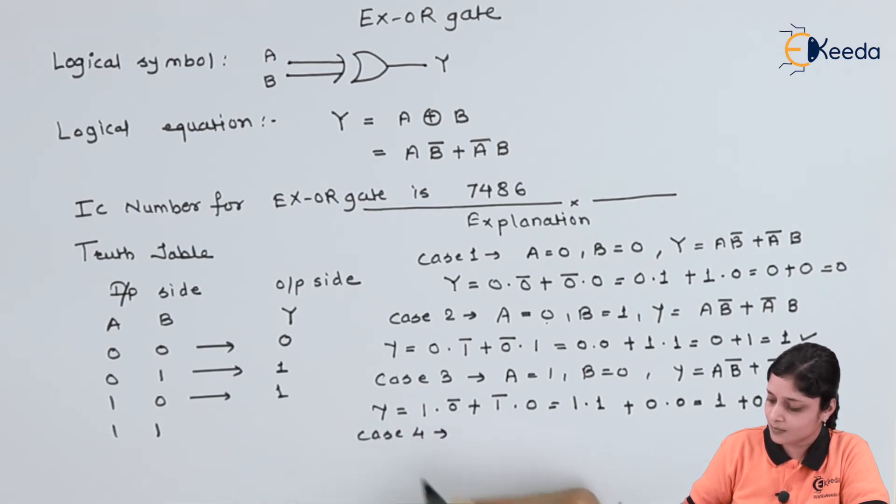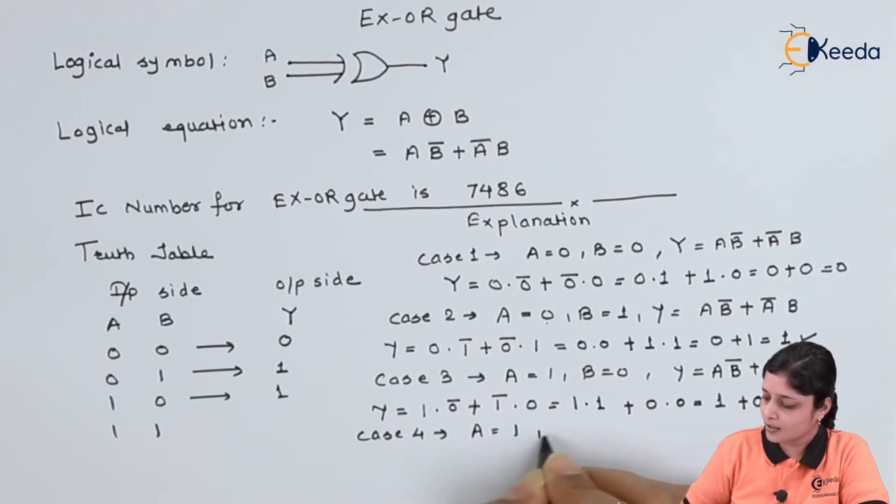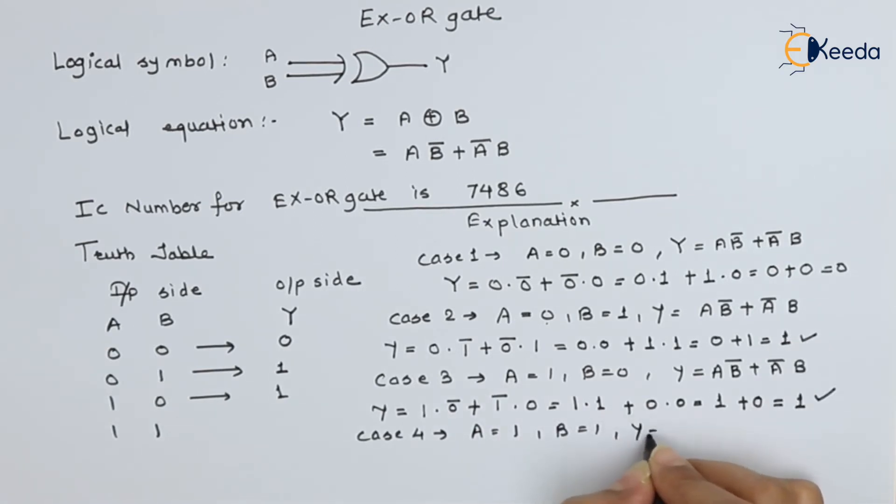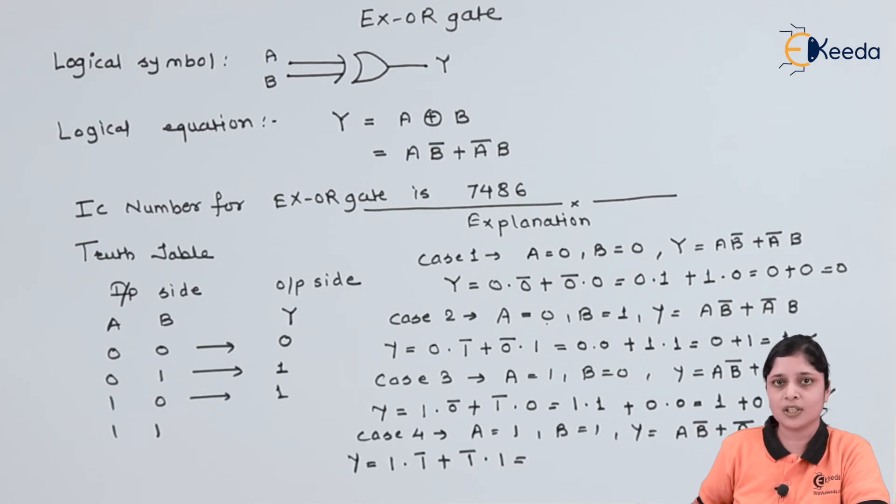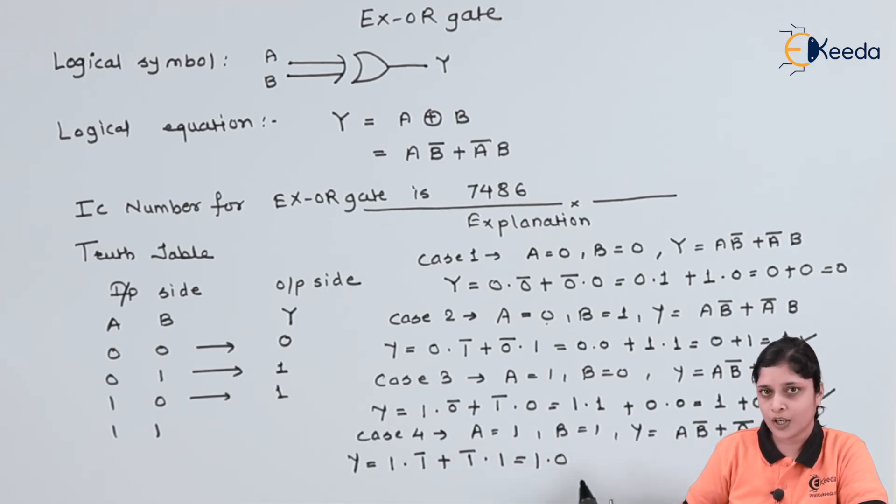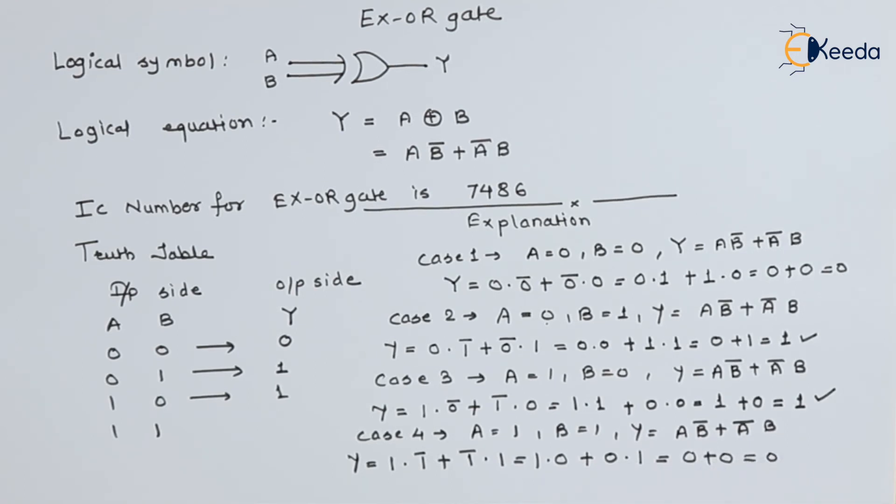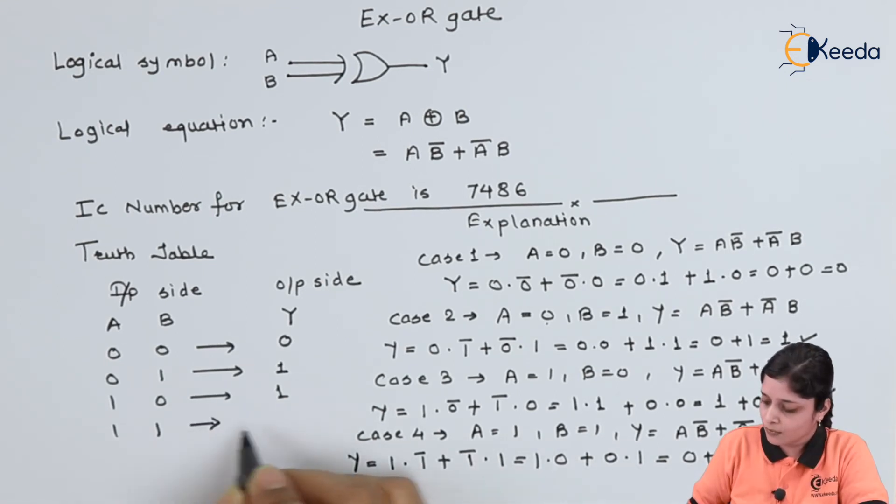Now, case 4. We have A equals to 1. B equals to 1. Your output equation is A B bar plus A bar B. So, Y equals to 1 dot 1 bar plus 1 bar dot 1. Now, you have to solve this equation according to the basic rules of binary. 1 dot 0. 1 complement is 0 plus again 1 complement is 0 dot 1. Logical multiplication will give you 0 plus 0. Final answer is 0. So, for the combination of A equals to 1, B equals to 1, your output is 0.